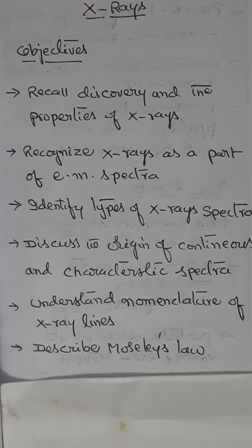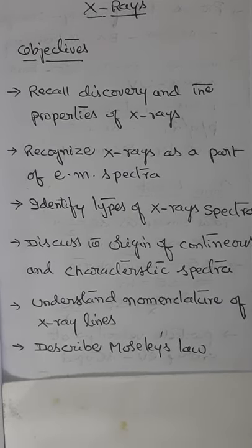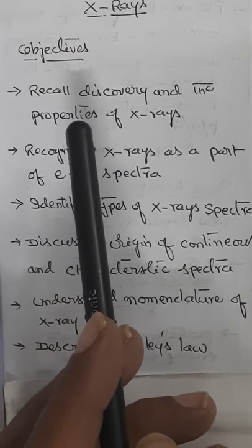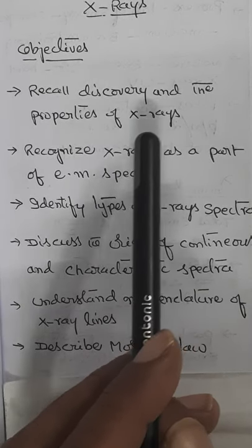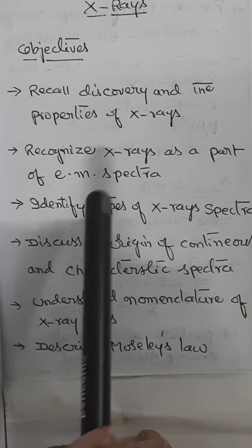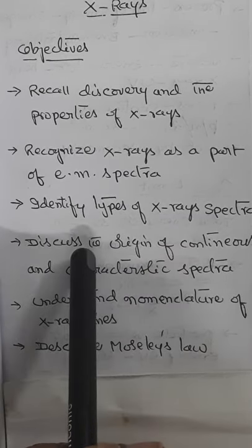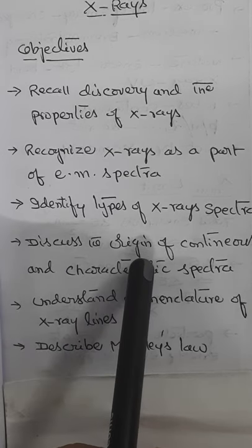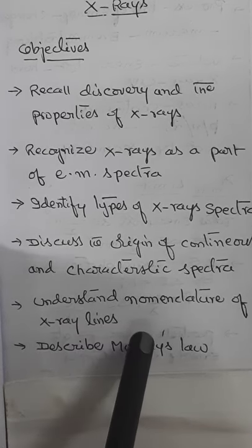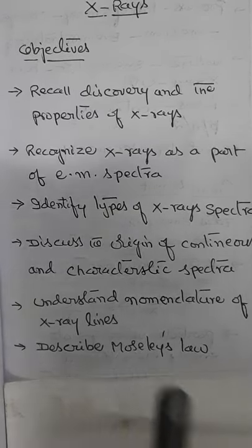In Engineering Physics, we shall try to understand X-rays. In the current session, our objectives are that we shall be able to recall the discovery and the properties of X-rays. We shall try to recognize X-rays as a part of the electromagnetic spectrum. We will be able to identify the types of X-ray spectra, discuss the origin of continuous and characteristic spectra, understand the nomenclature of X-ray lines, and conclude the session by describing Moseley's law.